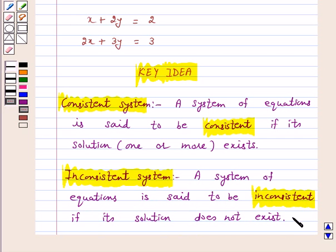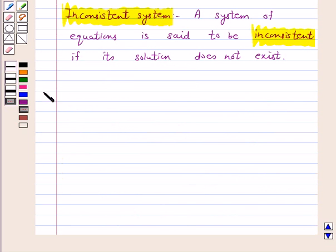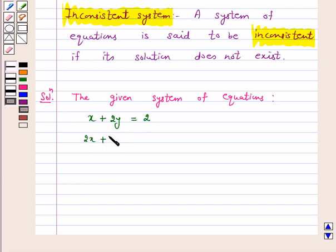Now start the solution. Solution. The given system of equations are x plus 2y equals 2 and 2x plus 3y equals 3.